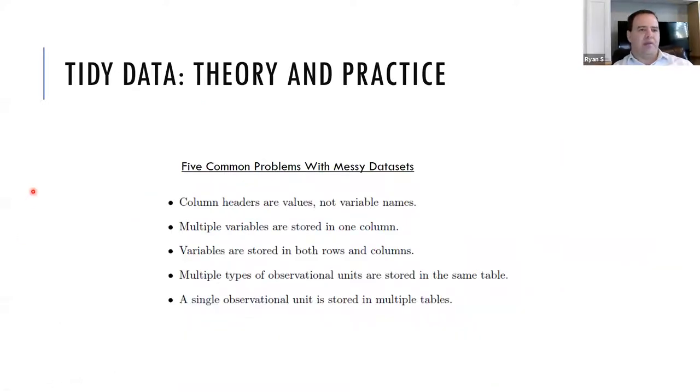Then we go into five common problems with messy data sets. They are column headers or values, not variable names. Multiple variables are stored in one column. Variables are stored in both rows and columns. Multiple types of observational units are stored in the same table, and a single observational unit is stored in multiple tables.